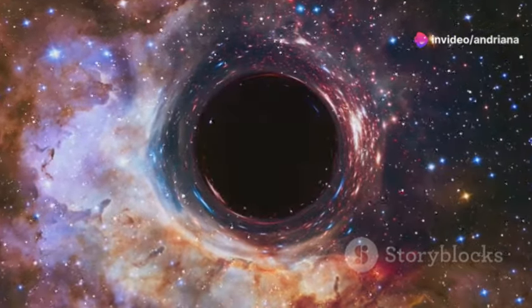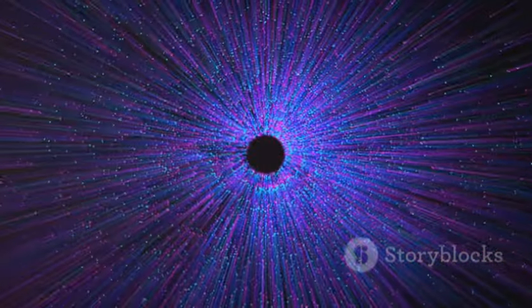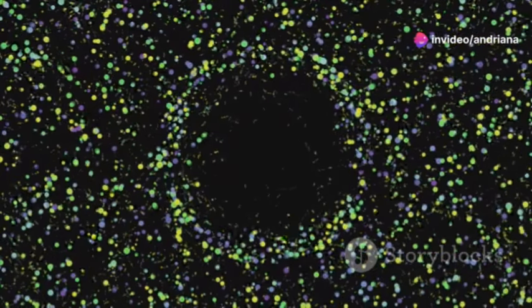How can we tell the difference? One potential clue lies in the behavior of matter around these objects. If we observe particles entering a black hole and not being utterly destroyed, but instead emerging elsewhere, that could be a strong indicator of a wormhole.